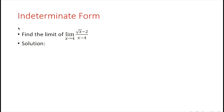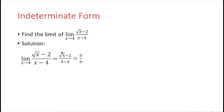Next example: find the limit of the square root of x minus 2, all over x minus 4, as x is approaching 4. Using direct substitution, we get the square root of 4 minus 2 over 4 minus 4, which gives 0 over 0. Since this is indeterminate form, we cannot say the limit is undefined or does not exist.